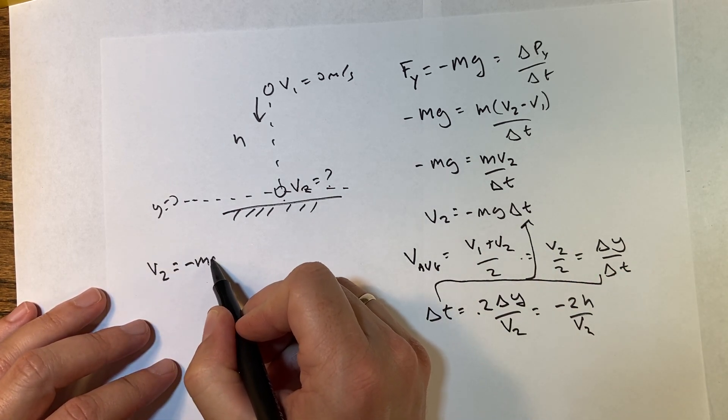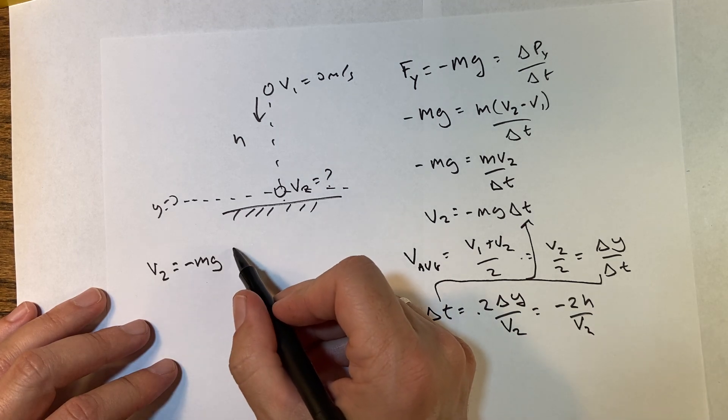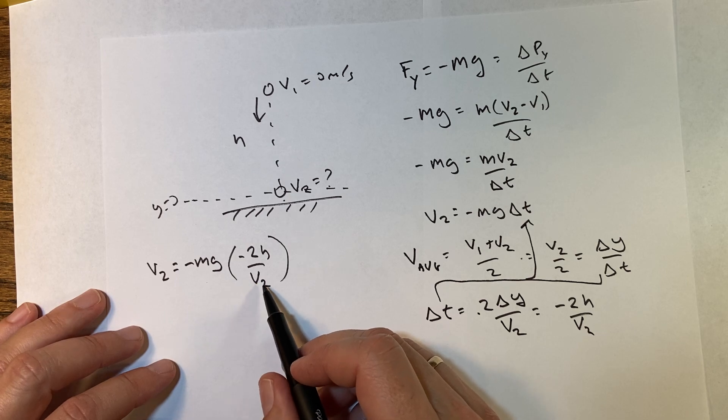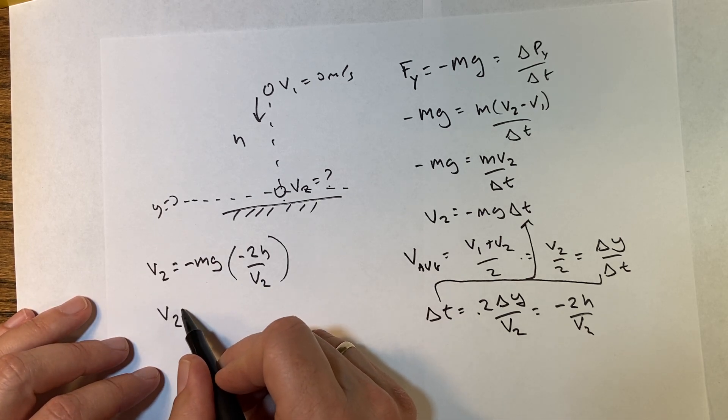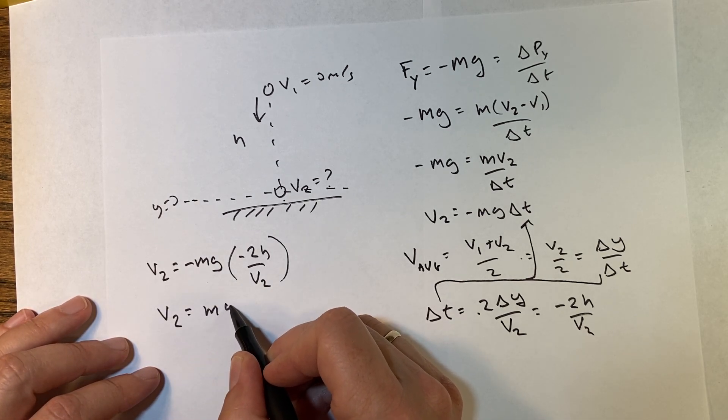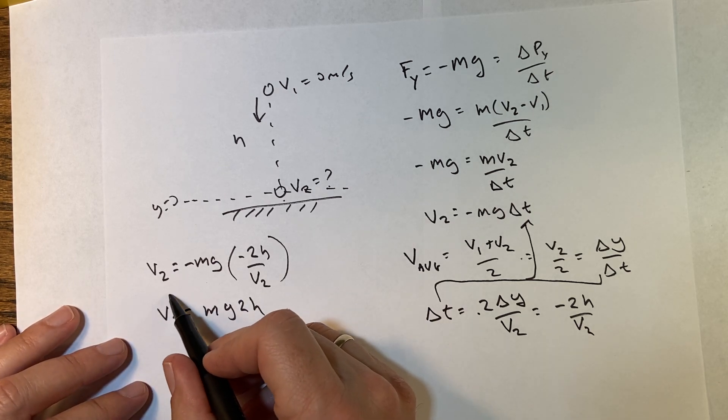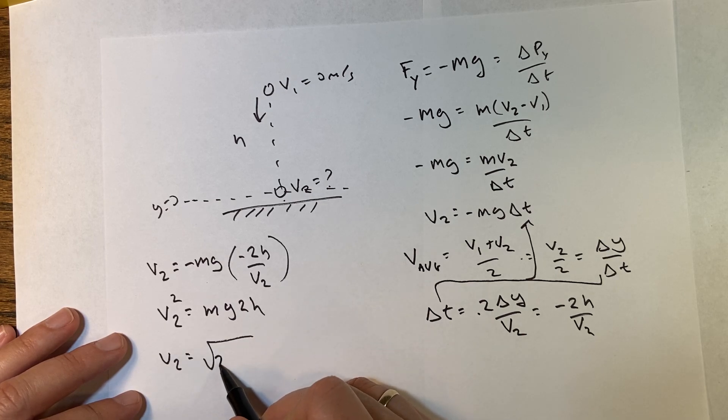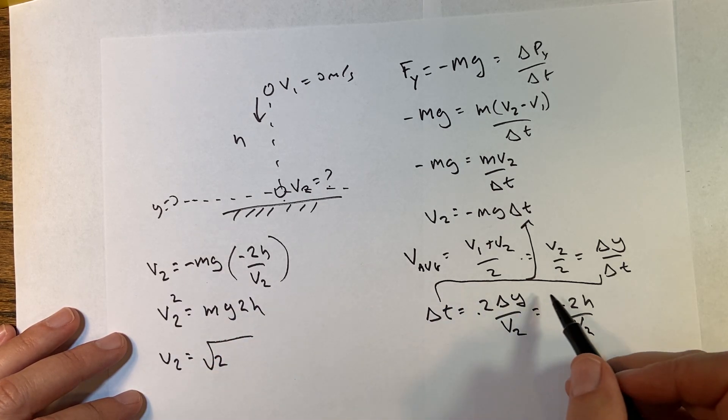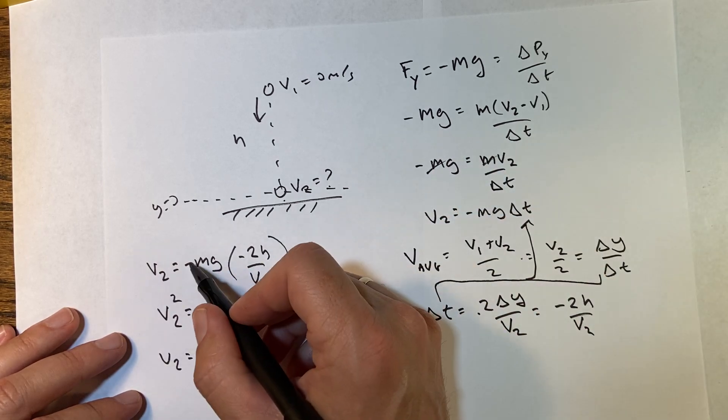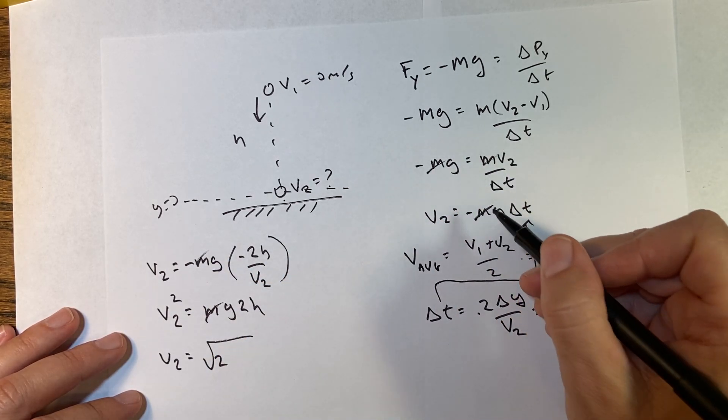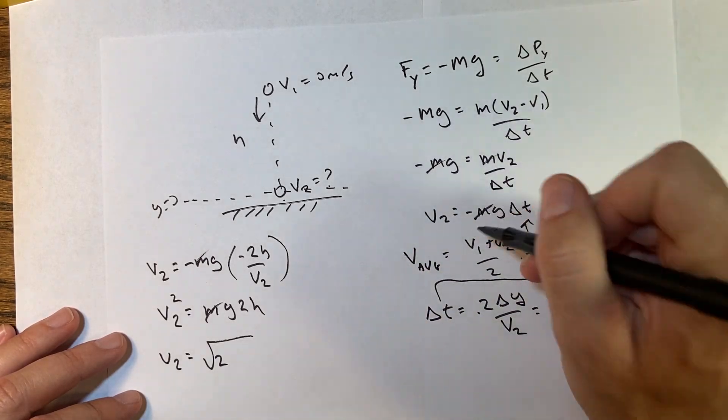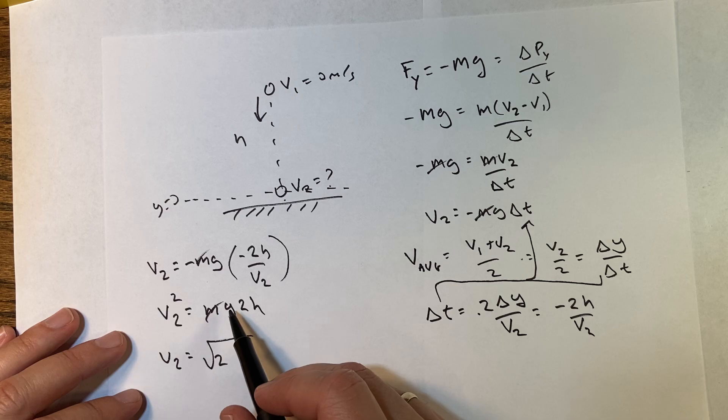So I get v2 equals negative mg delta t, which is going to be negative 2h over v2. And then I'm going to multiply both sides by v2: v2 squared equals mg times 2h. v2 equals the square root of 2—oh wait, the mass cancelled. Mass cancelled. Mass cancelled, my fault. Mine. That's bad, me bad. But I fixed it, so it's not bad.